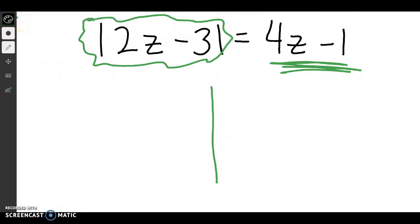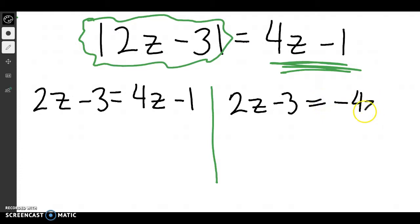So my positive side would just be 2z minus 3 equals 4z minus 1, and my negative side would be 2z minus 3. It just stays the same, and this will switch both its signs, so negative 4z and positive 1. So again, if you look, I have to switch both my signs, so that becomes a negative and that becomes a positive.